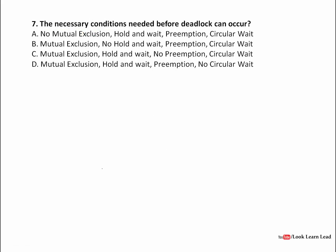The next question asks about the necessary conditions for deadlock. There are four conditions: mutual exclusion, hold and wait, no preemption, and circular wait. Looking at the options — no mutual exclusion rules out option A, no hold and wait rules out B, preemption rules out D, so the correct answer is C, which lists all four necessary conditions correctly.